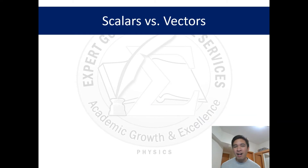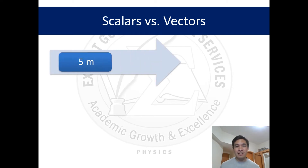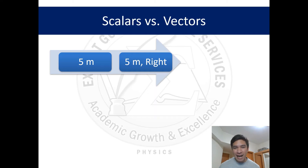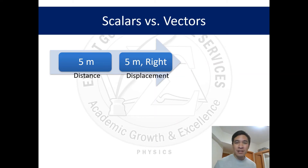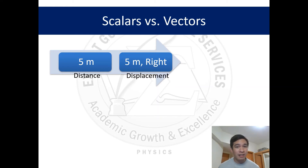In some cases numbers can be translated from scalars to vectors. For instance, '5 meters' contains magnitude alone, but if you add direction — '5 meters right' — it becomes a vector. As a scalar it's called distance, but as a vector, since it now denotes direction, it's better called displacement, or in some cases position.